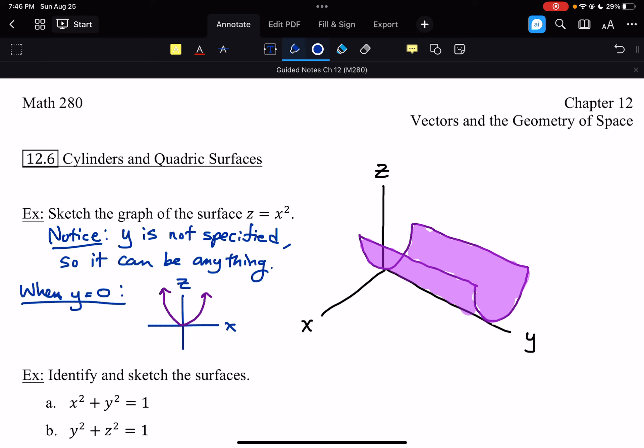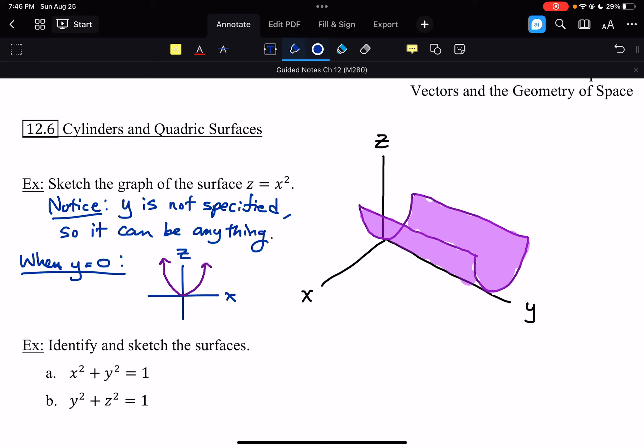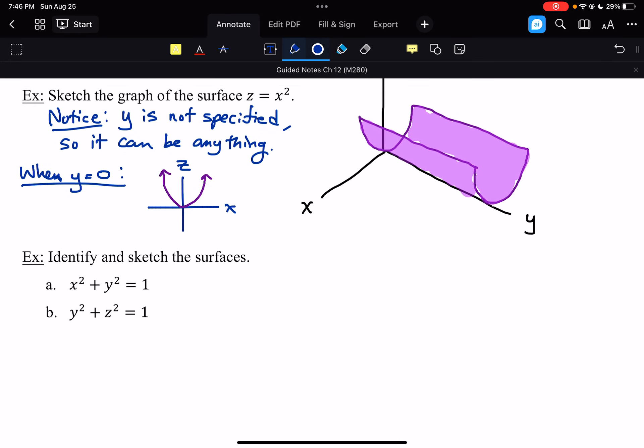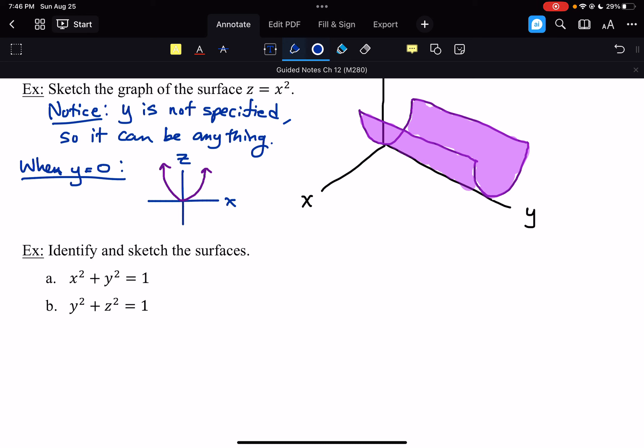So this is the surface we would get. And if we consider a couple different equations, identify and sketch these surfaces. So if we look at part A for this one, this first equation should not look that unfamiliar to you. Because this equation in 2D, so when you're in the x, y plane, this is a circle.